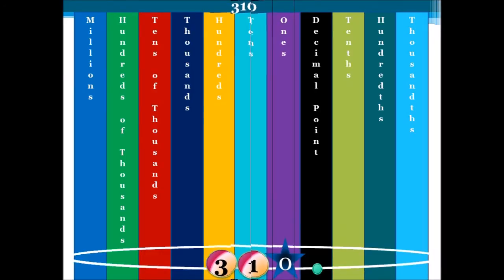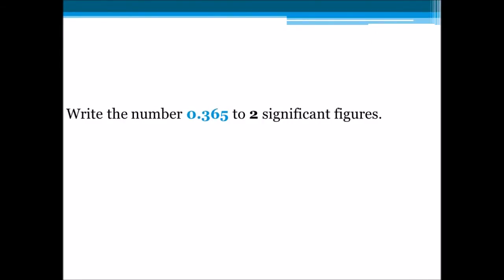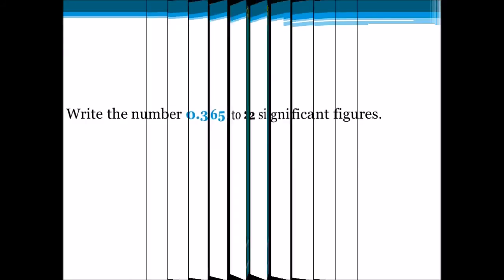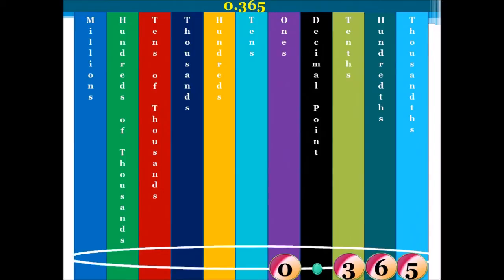Let's try another question. Write the number 0.365 to two significant figures. Let's set up our table. We have 0.365 — do you see that each number holds a specific place value? We're asked to write this number to two significant figures. Our first significant figure is 3, and our second significant figure is 6. We look to the number that follows our second significant figure — in this case, it's 5. Is this number equal to or greater than 5? It is equal to 5.